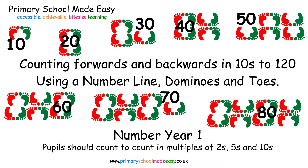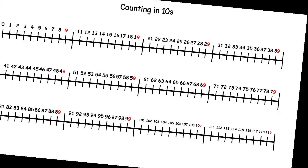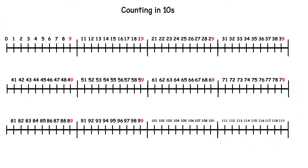Counting forwards and backwards in tens to 120 using a number line, dominoes and toes. We're going to count forwards and backwards in tens. Each time the units reach 9,